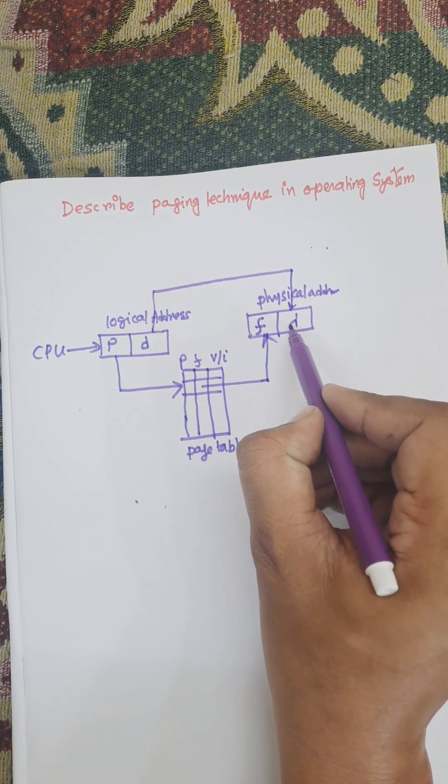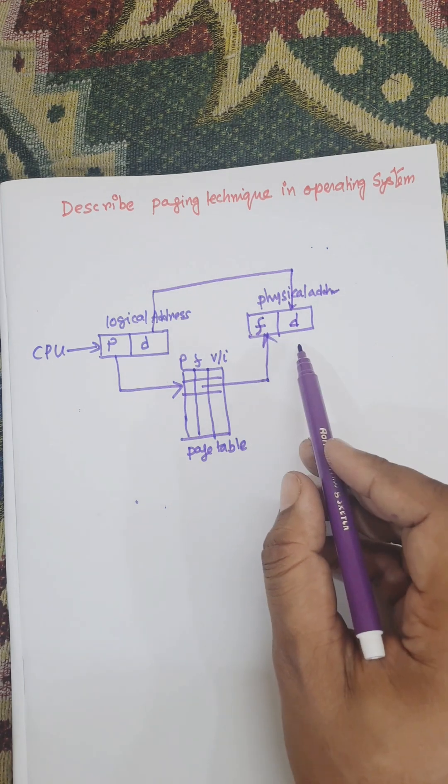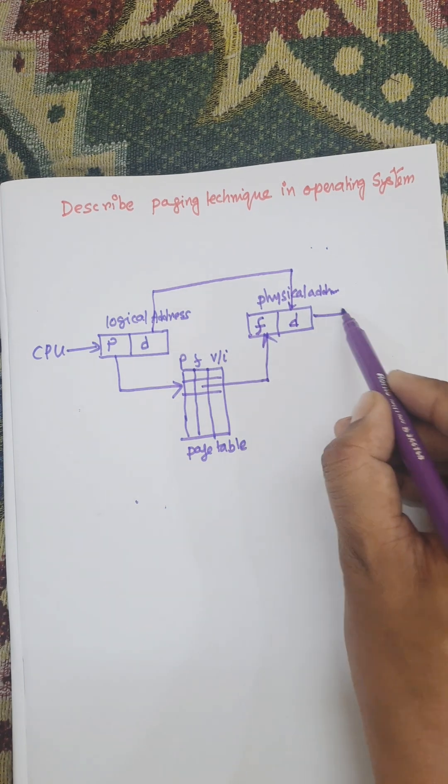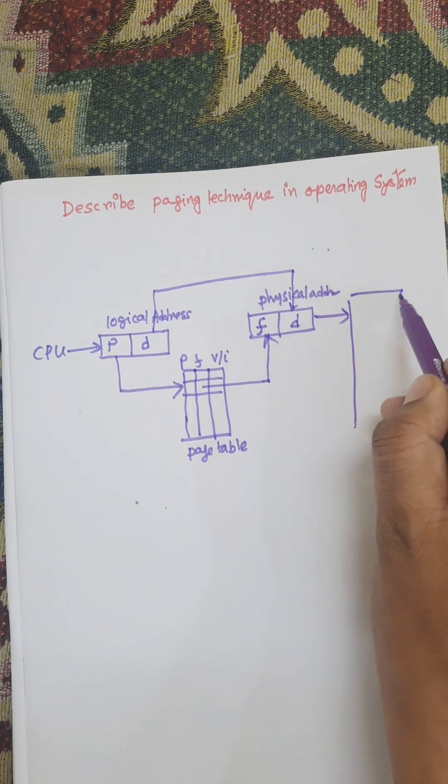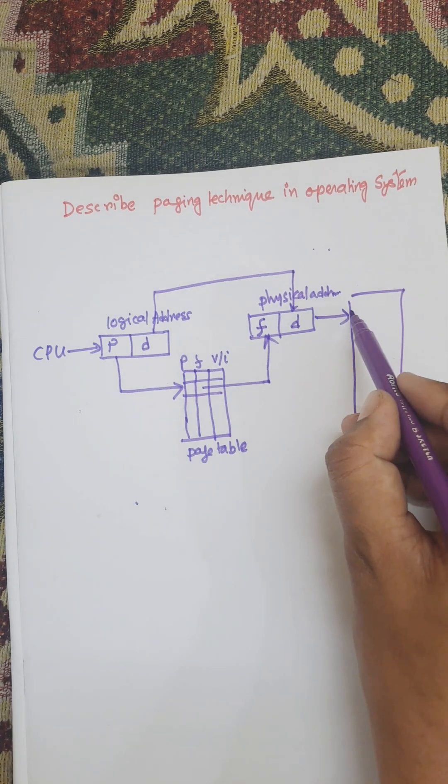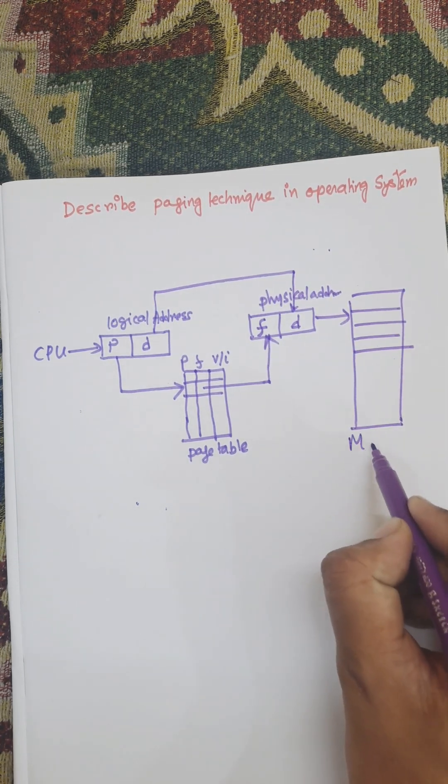Now, F and D together form the address of physical locations of memory. This is the main memory.